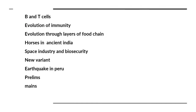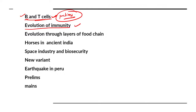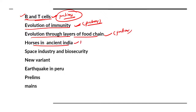Good morning everyone, welcome to Let's Crack UPSC. In today's The Hindu analysis, the topics we are going to discuss include B and T cells, evolution of immunity, evolution through layers of food chain, and horses in ancient India — all important prelims topics from The Hindu's science and technology and history sections.